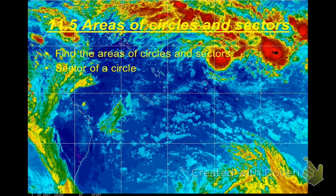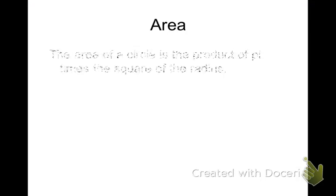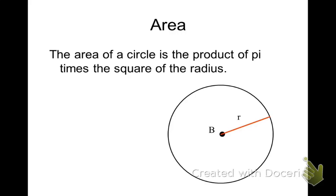Section 11.5 is on the areas of circles and sectors, and we're going to relate this back to arc length and circumference from 11.4. First, we learn when we're pretty young the area of a circle is equal to pi r squared. That's our formula, pi times radius squared.